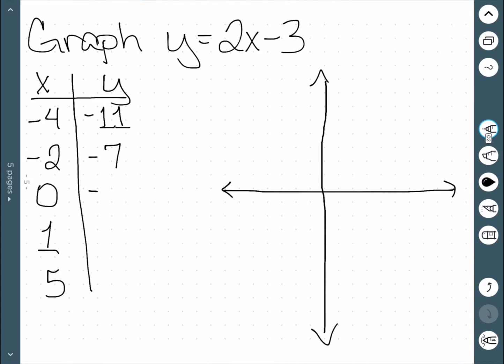2 times 0 minus 3 is negative 3. 2 times 1 minus 3 is negative 1, and 2 times 5 minus 3 is 7.